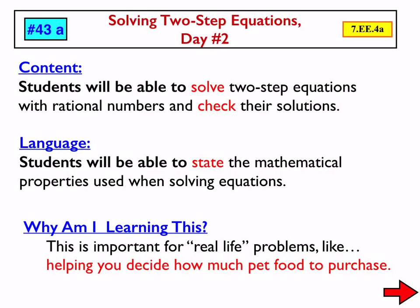Today, lesson 43A, day number two of solving two-step equations. Yesterday, we started the first half of this idea, restricting all of the constants and coefficients to integers. Today we take that out to rational numbers — in other words, positive and negative decimals, positive and negative fractions, or mixed numbers, or a combination of those two things. So today we're going to finish up this idea of solving two-step equations, and everything that we talked about yesterday applies today.